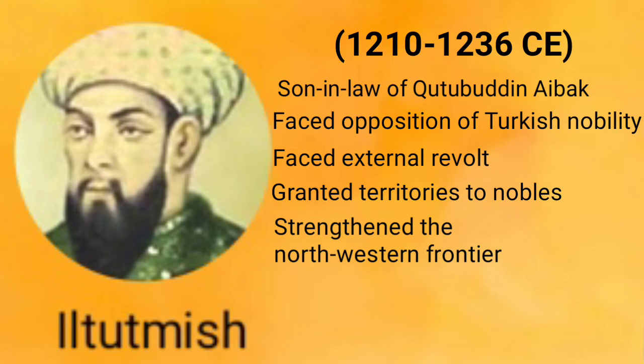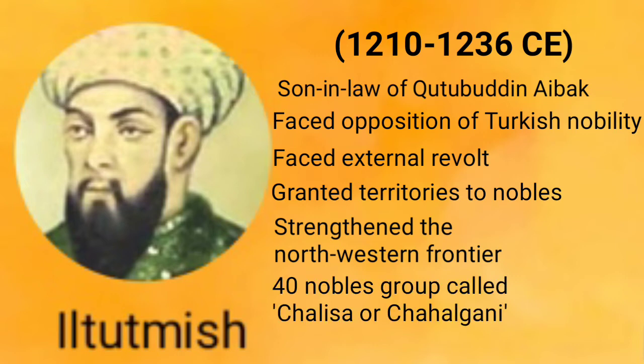He made many changes in his administration too. In order to introduce efficiency, Iltutmish organized his nobility into a select group of 40 nobles called Chalisa or Chahalgani. This group played a very crucial role in the politics of the Slave dynasty, and these 40 noble people helped Iltutmish in his administration and brought new changes.